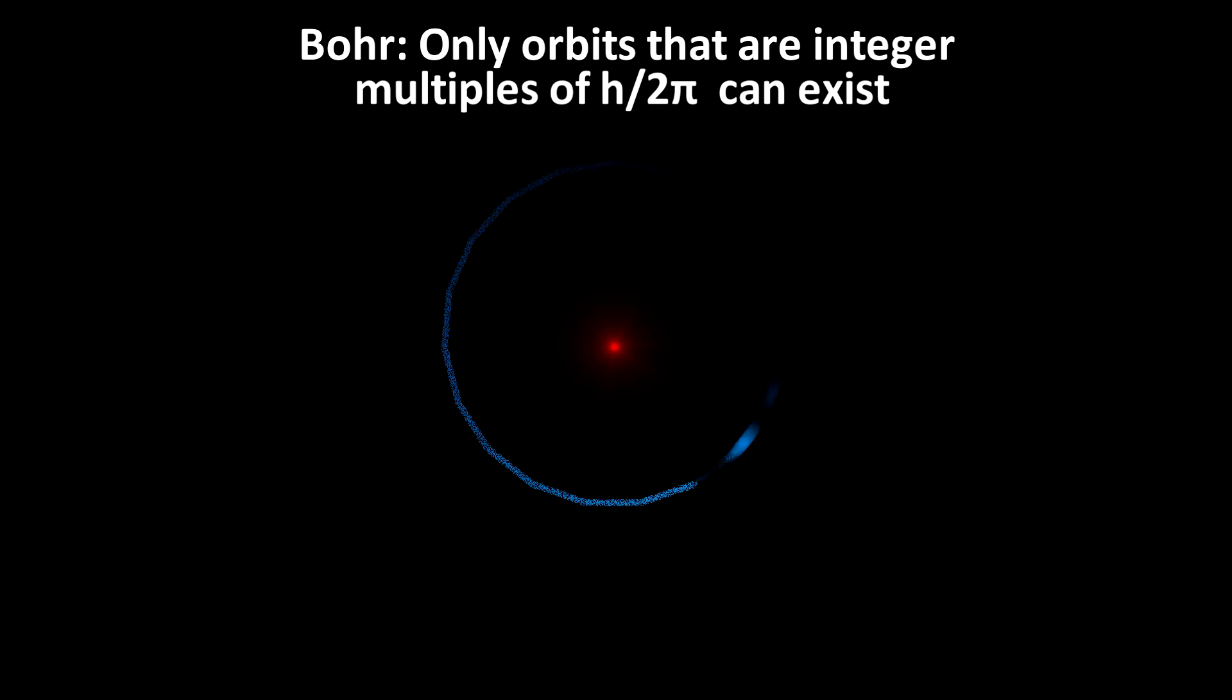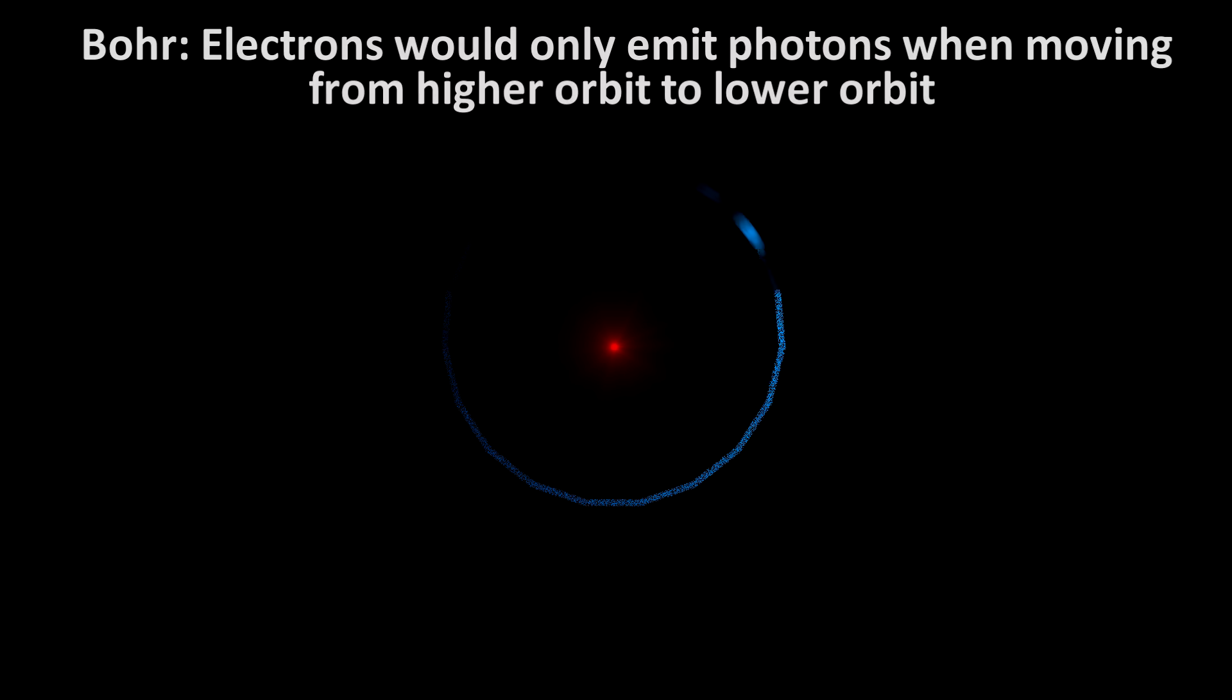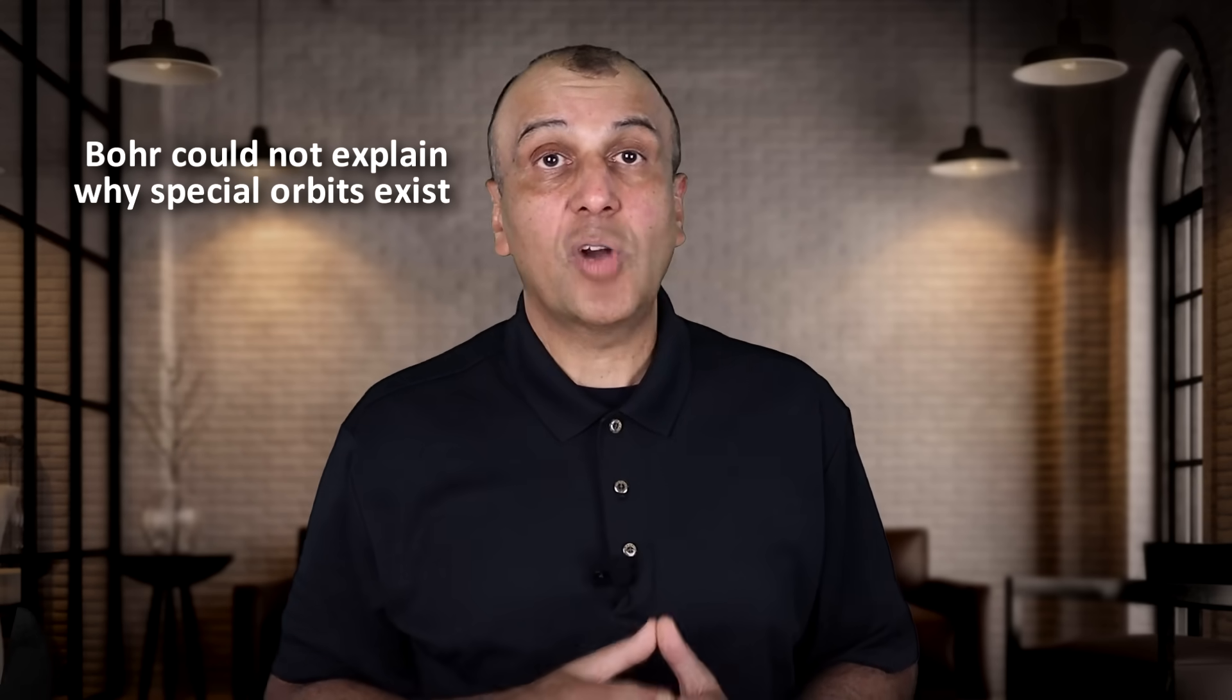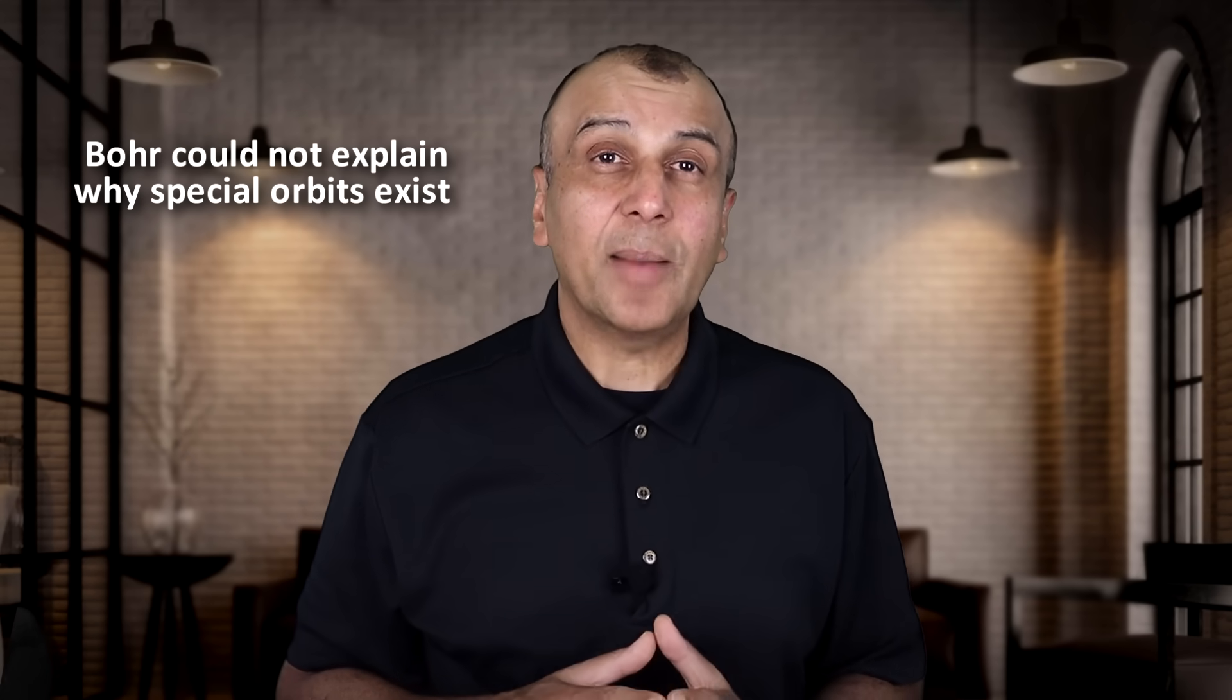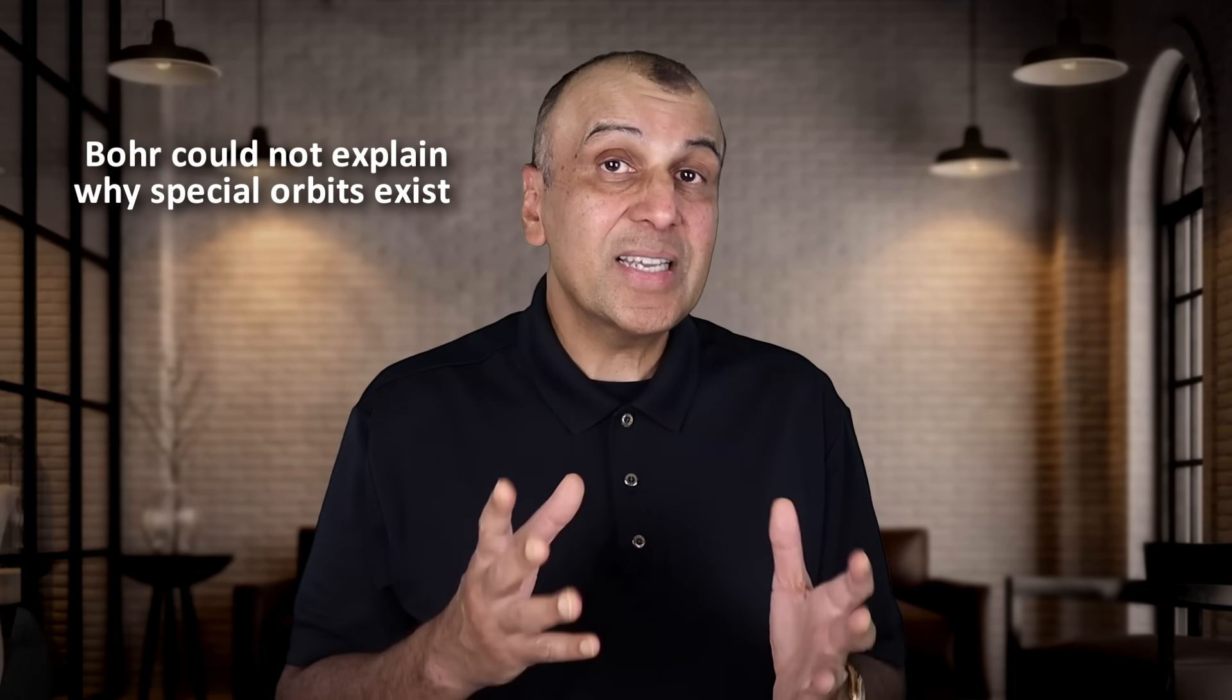And any orbit could exist as long as it was an integer multiple of this number. So the next orbit would be 2 times h over 2 pi, and then 3 times for the next one, and so on. And Bohr predicted that the electrons would only radiate or absorb energy when these electrons jumped from one orbit to another. But Bohr could not explain why electrons would not emit photons all the time, or why these special orbits should exist in the first place.